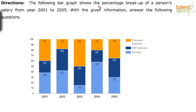The following bar graph shows the percentage breakup of a person's salary from year 2001 to 2005. With the given information, answer the following questions. There is a bar graph given to us. When it comes to data interpretation, it is very important for you to understand the given data first. Don't jump to the questions directly. Don't be in a hurry to solve the questions.